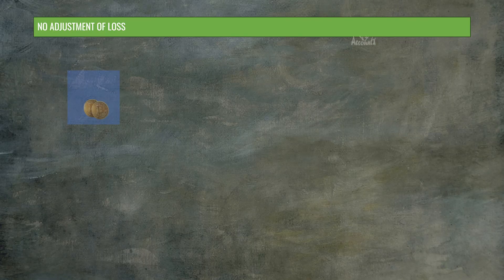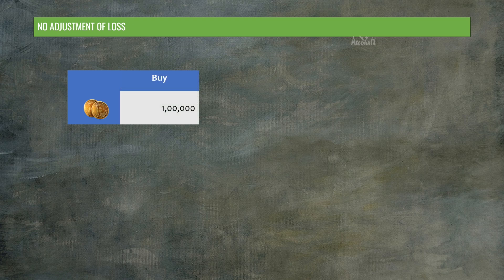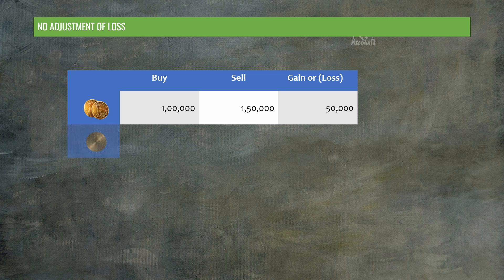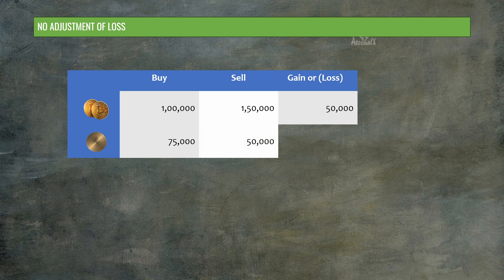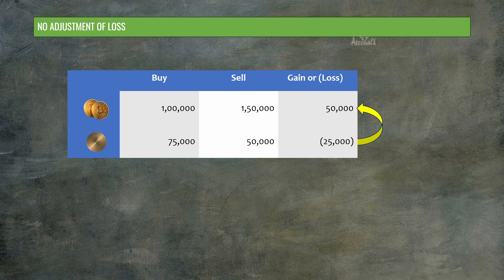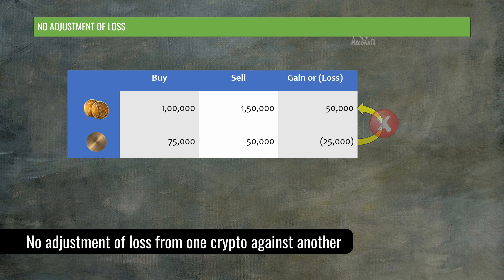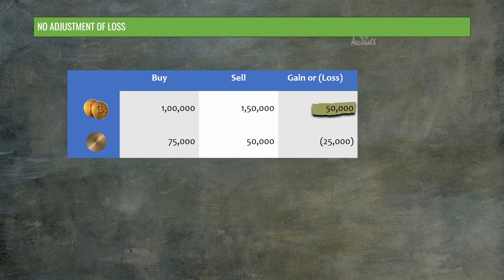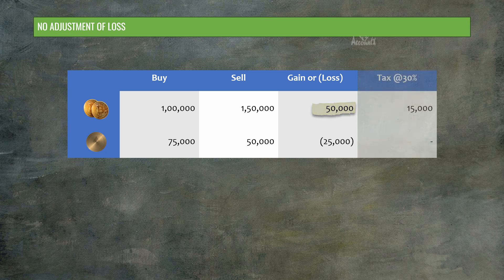Third: if you bought Bitcoin for Rs. 1 lakh and sold it for Rs. 1.5 lakh — a gain of Rs. 50,000 — and you also have an Ethereum transaction where you bought it for Rs. 75,000 and sold it for Rs. 50,000 — a loss of Rs. 25,000 — usually the loss from one asset would be adjusted against income from another. But in case of cryptocurrencies, this adjustment is not possible. So Rs. 50,000 is your taxable income, tax is paid at 30% — equal to Rs. 15,000 — and the Rs. 25,000 loss cannot be used.